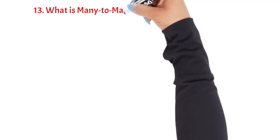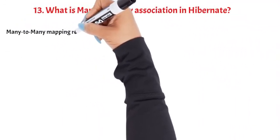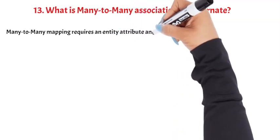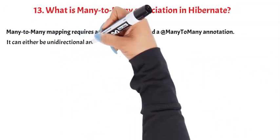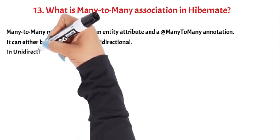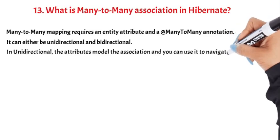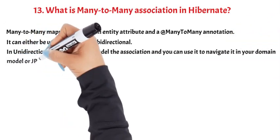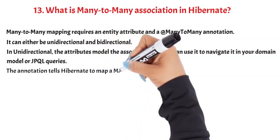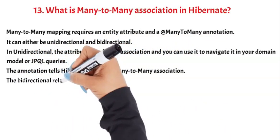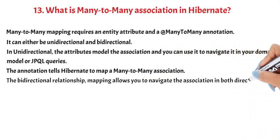Question 13: What is many-to-many association in Hibernate? Many-to-many mapping requires an entity attribute and a @ManyToMany annotation. It can either be unidirectional or bidirectional. In unidirectional, the attributes model the association and you can use it to navigate it in your domain model or JPQL queries. The bidirectional relationship mapping allows you to navigate the association in both directions.